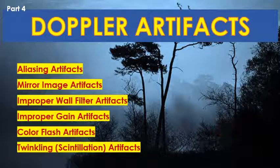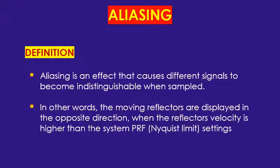Starting with aliasing — it's a common artifact. What is it? It occurs when there is some discrepancy or mismatch between the velocity of the blood and the machine setting in dealing with this velocity. In detail, there is something called the Nyquist limit, which is half of the PRF. If the Doppler shift delivered to the machine through reflections is higher than this Nyquist limit, that part of the velocity will be aliased.